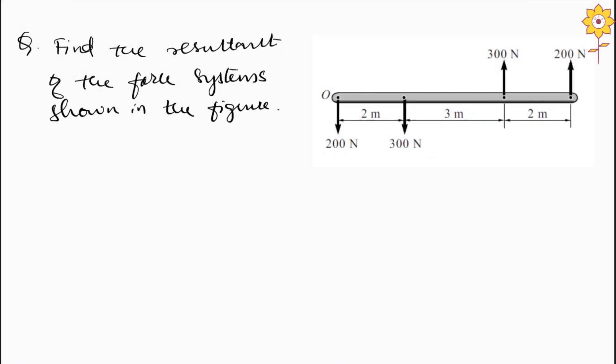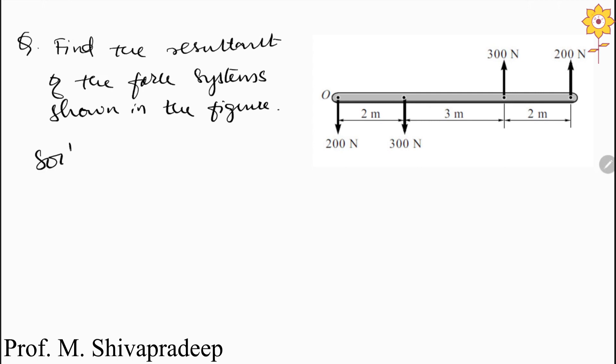Hello everyone, welcome to MES e-learning channel. In this video we will solve another type of parallel force system problem. Here we have to find the resultant of the force system shown in the figure. We have two forces acting upward and two forces acting downward, and the distances are given.